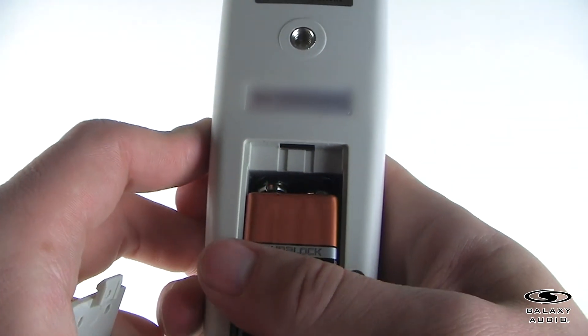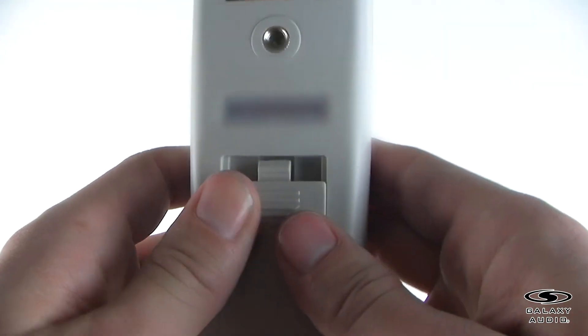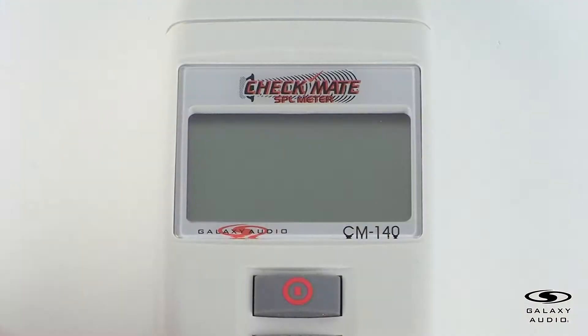First, remove the battery cover on the back and put in one 9-volt battery. After inserting the battery, press the power button to turn on the CM140.